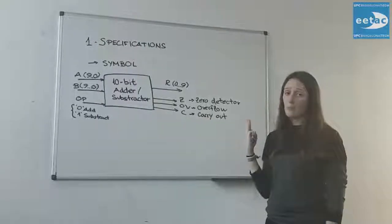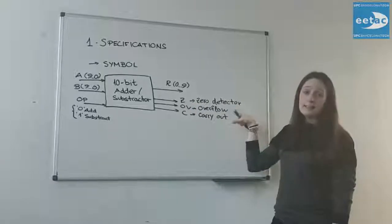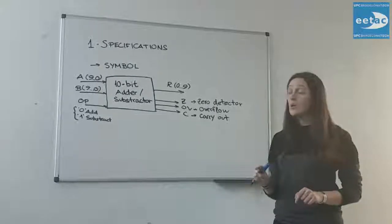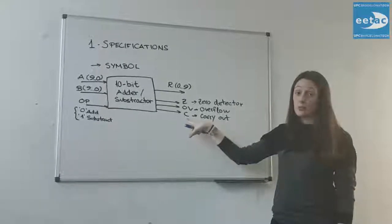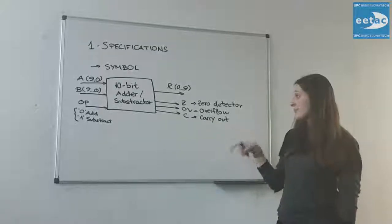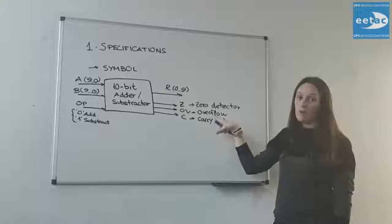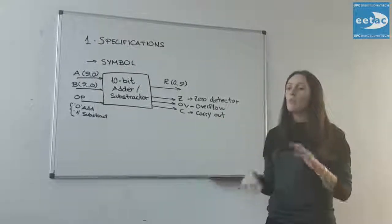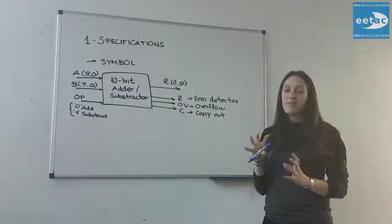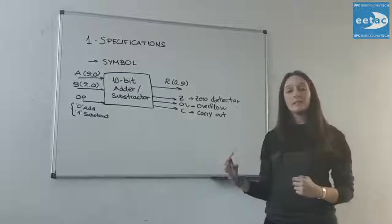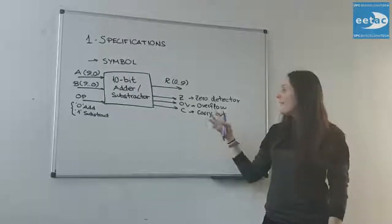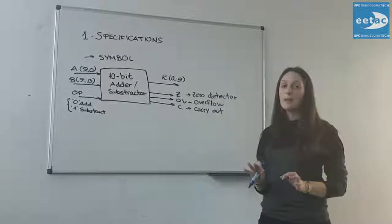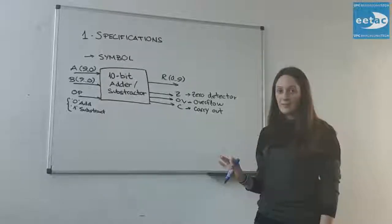By the other hand we will have other outputs, three outputs in this case. The zero detector, it is referred to the case when all the bits of the result are 0 and moreover the carry is a 0 too. So C is the carry out and this output is the overflow. Overflow is a bit difficult to explain without having a mathematical theory to understand and be able to deal with this output. So we are going to explain an algorithm that is called the two's complement.